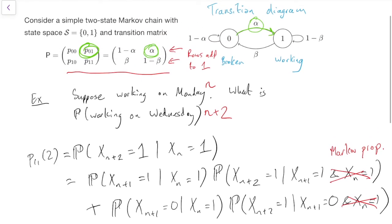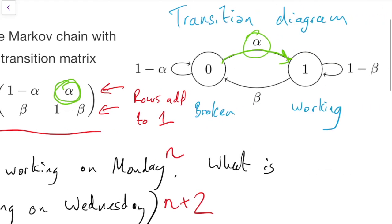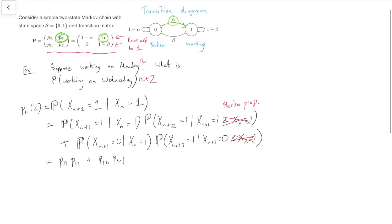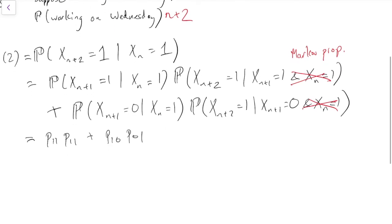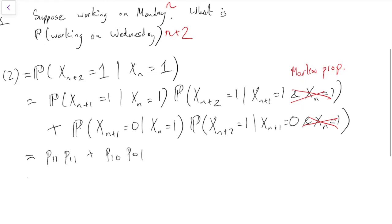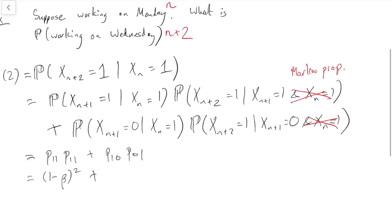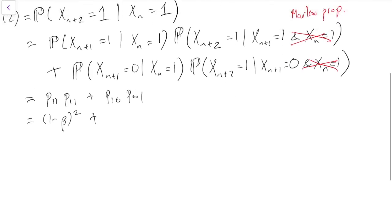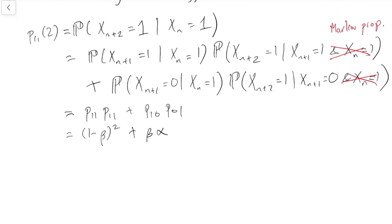If we look those up, either in our transition matrix or look at them in our transition diagram, we can see what we've got here. We've got P11 is 1 minus beta, so two of those is (1 minus beta) squared. P10, the probability from 1 to 0 is beta, and the probability back from 0 to 1 is alpha. So that gives us the answer.